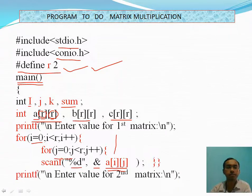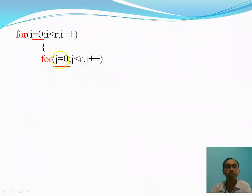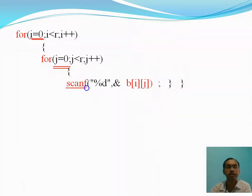This is where we show the prompt for the second matrix — 'Enter the value for the second matrix', for matrix B[i][j]. i equals zero for row, j equals zero for column, because both row and column exist in a 2D matrix. So scanf with %d takes integer input from the keyboard for B[i][j] — the second matrix is thus taken as keyboard input.